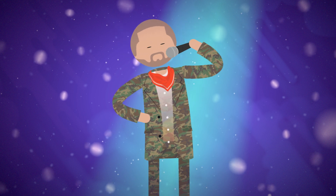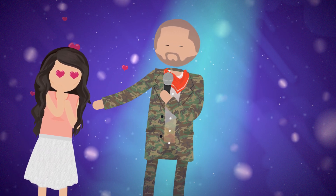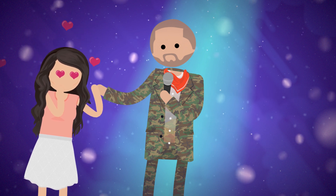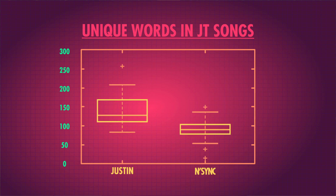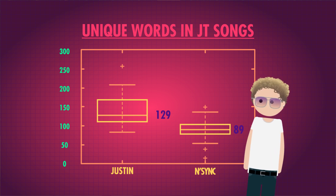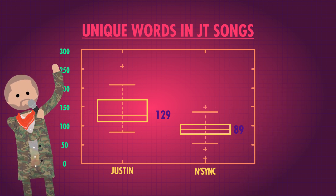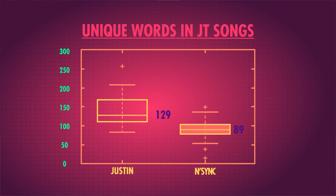Justin Timberlake has a new album. Our writer Chelsea wanted to know how going solo affected the songs he wrote — specifically, the number of unique words he used per song. She made a boxplot for a sample of Justin Timberlake's solo songs and one for a sample of songs he sang with NSYNC. The first thing we might notice is that the medians are pretty different. The median number of unique words in a JT solo song is higher — 129 words versus a median of 89 back in his NSYNC days. So it seems like JT may have developed a larger lyrical vocabulary when he went solo. The box part of the NSYNC boxplot is also a lot smaller, showing that NSYNC songs have a relatively similar amount of unique words.